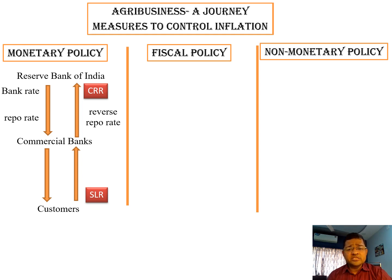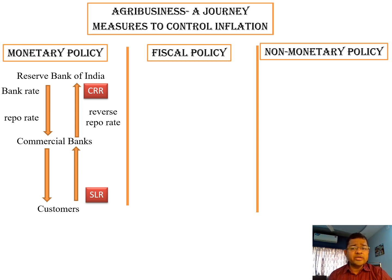All the commercialized banks deposit cash and gold under the custody of the Reserve Bank of India — that is called the CRR. And SLR means if the commercialized bank holds some amount of cash and gold under their own custody, that is called the SLR.